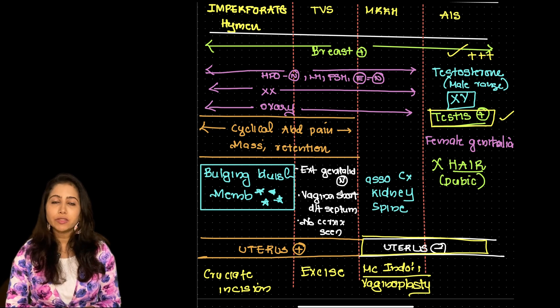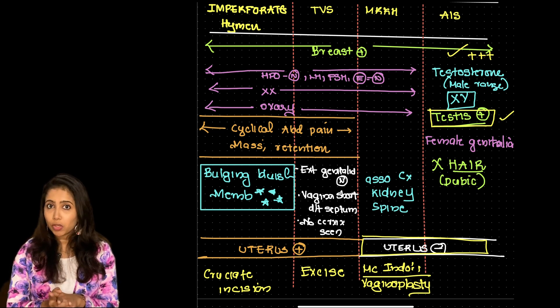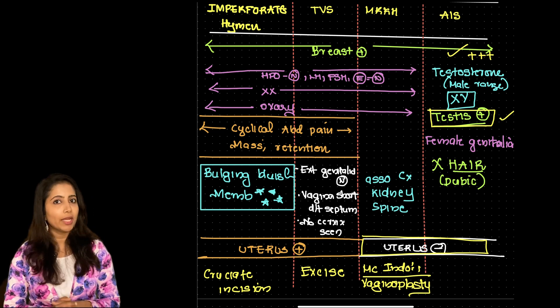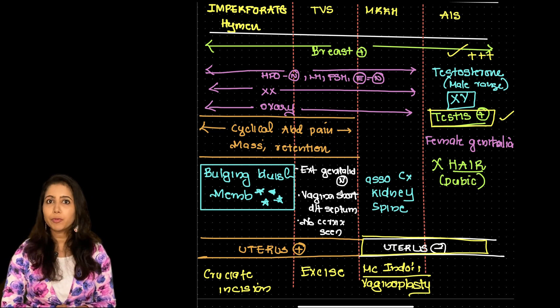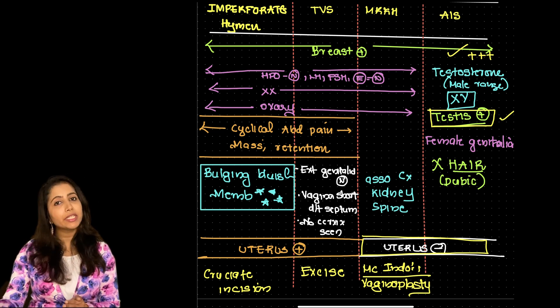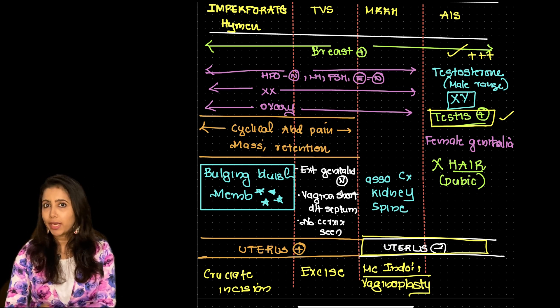So what is the treatment for this? It is very important to remove the gonads because there is high chance of gonadoblastoma. So once the puberty is attained we are going to go for a gonadectomy and when needed we might do a vaginoplasty as well.